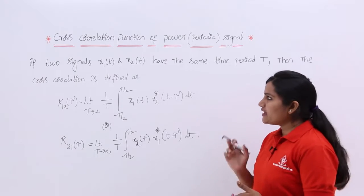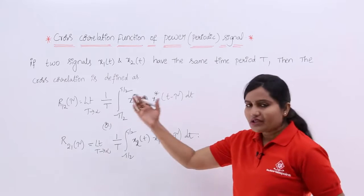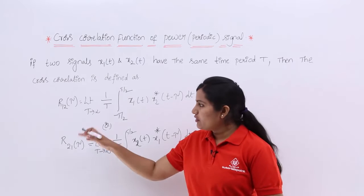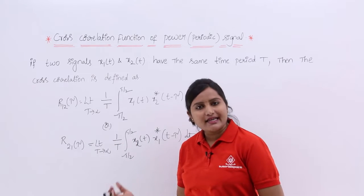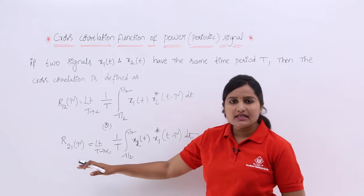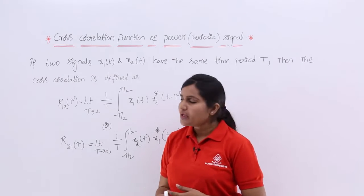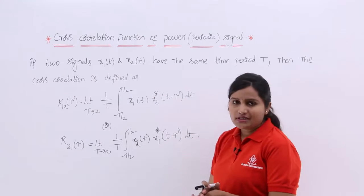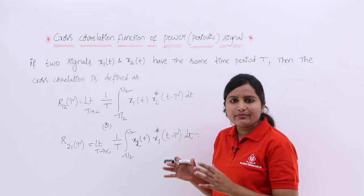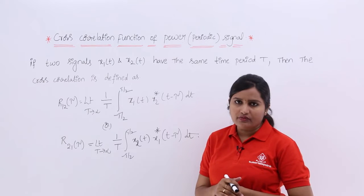If two signals x1(t) and x2(t) have the same time period T, then the cross correlation function can be defined as r12 or r21. If you are correlating the first signal with the second signal, that is considered as r12. If you are correlating the second signal with the first signal, that is considered as r21. The equations for r12(τ) are similar to the cross correlation equations for energy signals.